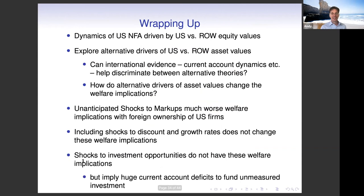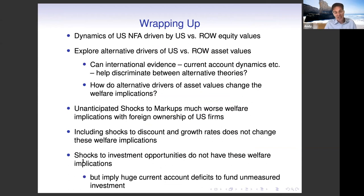So that's basically it. We talked about what drove the change in the U.S. net foreign asset position in a pure accounting sense, and then two different stories for why the stock market might rise: an unanticipated shock to markups versus a change in the production structure to emphasize unmeasured capital. The theme is that in a closed economy it's very hard to tell those two hypotheses apart, but in an open economy it's pretty straightforward. Thank you.